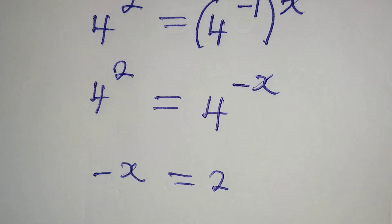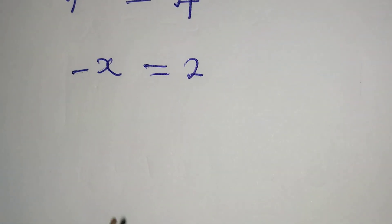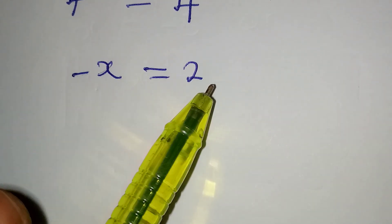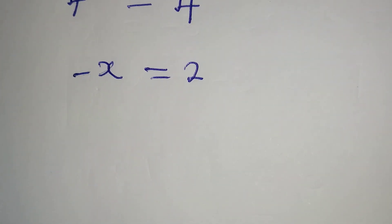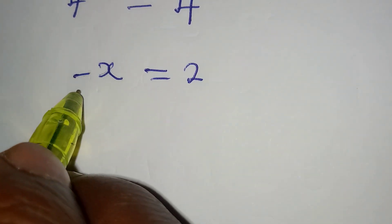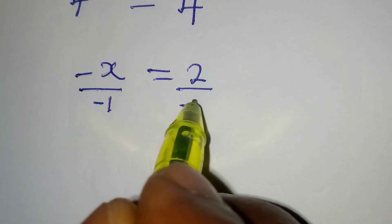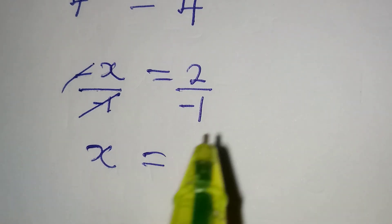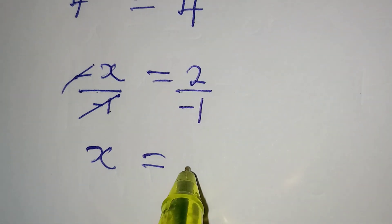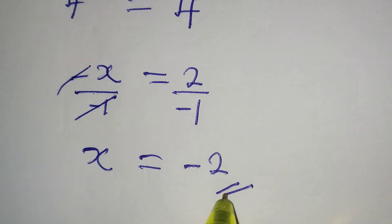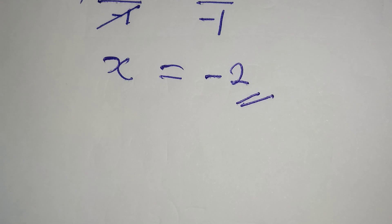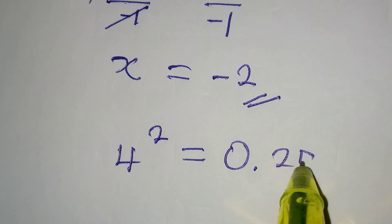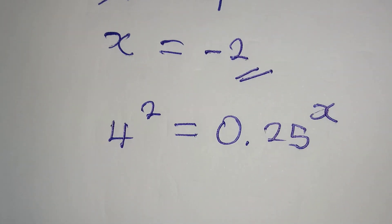Now, how do we solve this since we are looking for x alone? Some persons say transfer the negative to the other side, but the correct language is to divide by the coefficient of x, which is negative 1. Divide both sides by negative 1, so x is alone and equals 2 over negative 1, which gives us negative 2. This is the value of x that satisfies the equation 4 to the power of 2 equal to 0.25 to the power of x. Thank you for watching.